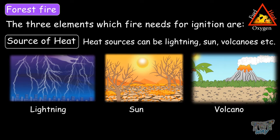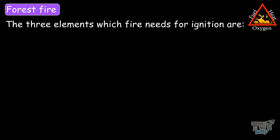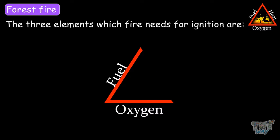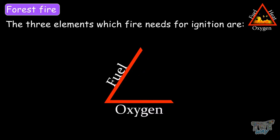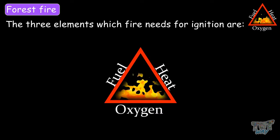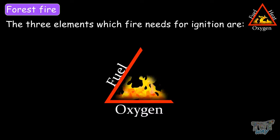So, we have studied the three elements which a fire needs to ignite: fuel, oxygen, and a source of heat. If any of these elements are missing, then the fire will not start. To start a fire, we need all three elements, and if we remove one of them, the fire will be extinguished.